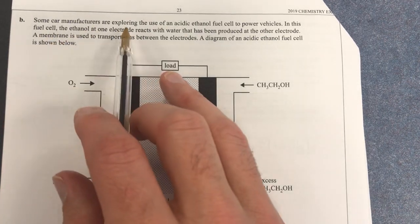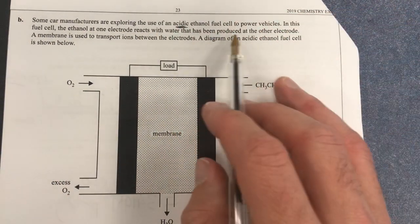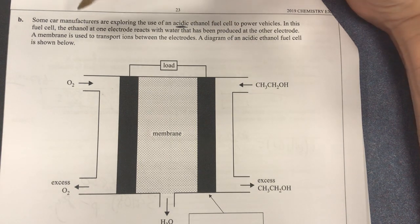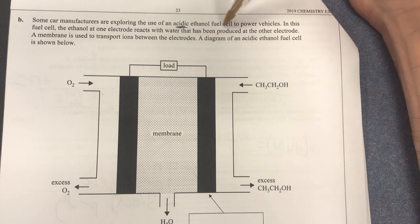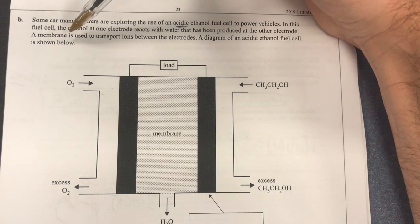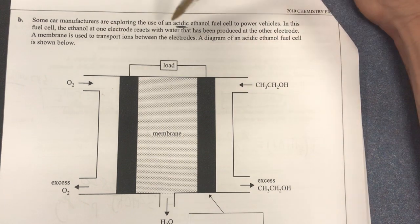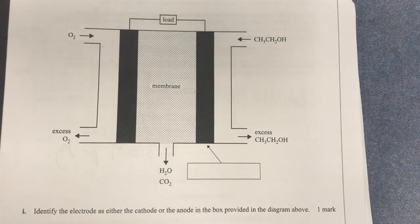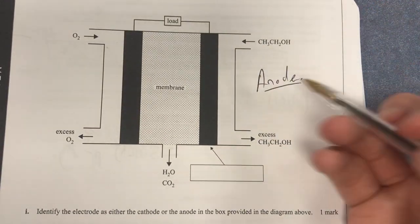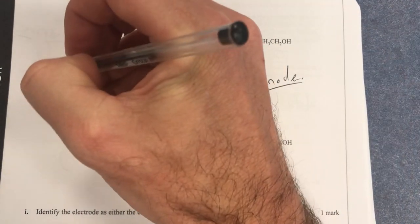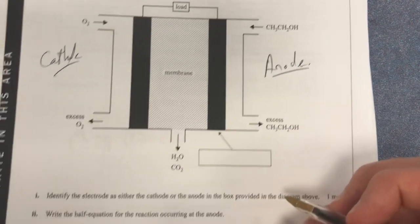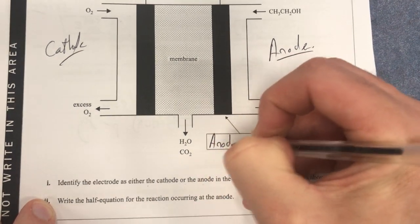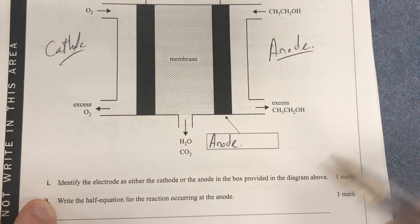Some car manufacturers are exploring the use of an acidic ethanol fuel cell to power vehicles. In this cell, ethanol at one electrode reacts with water that has been produced at the other electrode. This is a normal fuel cell, so the left electrode is the anode because in a fuel cell, the anode is where the fuel is going in, and the cathode is where the oxygen goes in. So this electrode here is going to be the anode because that is where the fuel is going and our fuel is going to be oxidized.